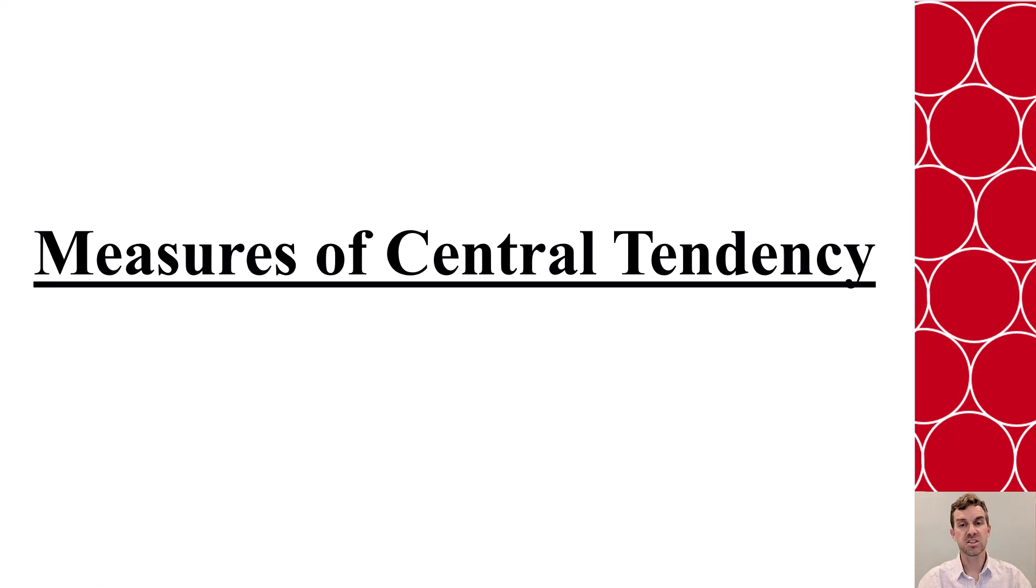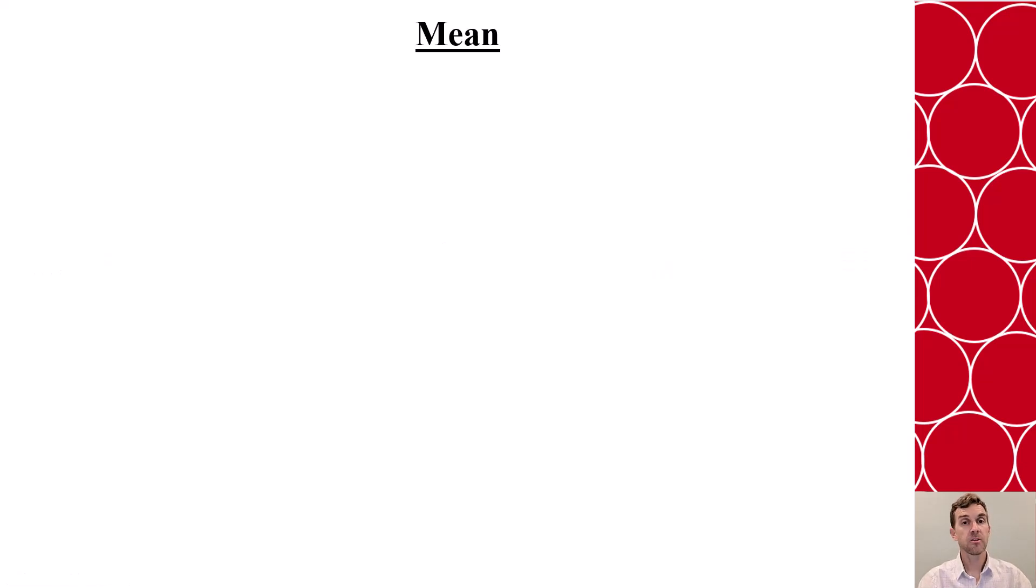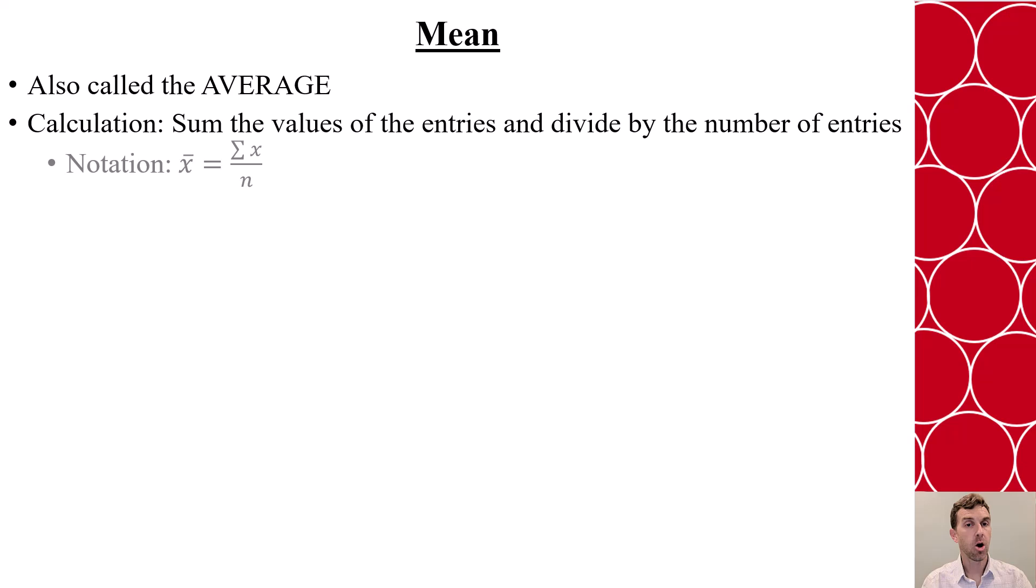In this video we'll discuss measures of central tendency. Our first measure is the mean, which we also call the average. To calculate the average, we add all the entries together and then divide by the number of entries.